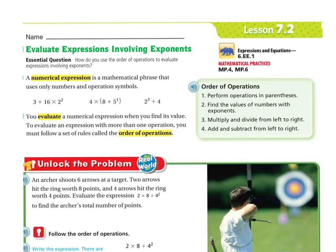Once you've solved all of the multiplication and division, you do addition and subtraction from left to right. Again, if subtraction comes first, you do the subtraction first — you simply do it like you read, from left to right.